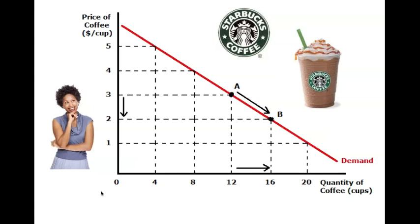Here we have this young lady and her demand curve for Starbucks coffee. When the price of coffee is very high, at let's say $5, she is willing to buy four units. But as the price drops from five to four, or from four to three, or from three to two, the amount she is willing to buy changes.